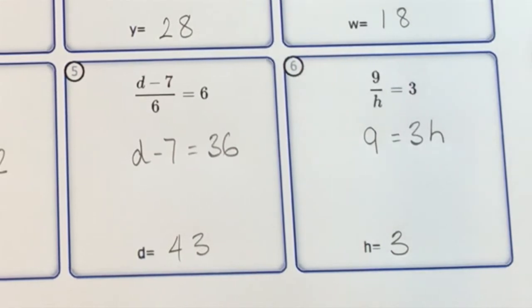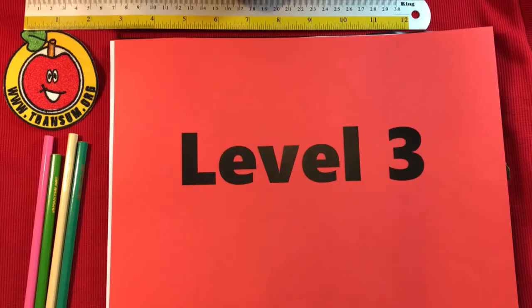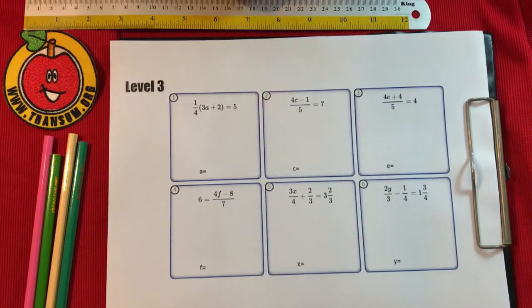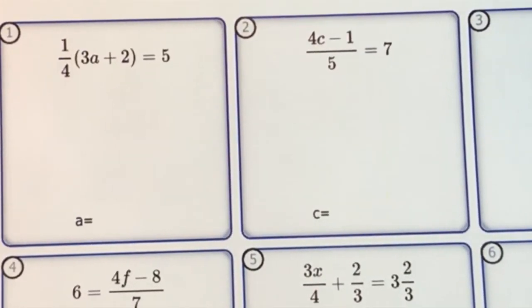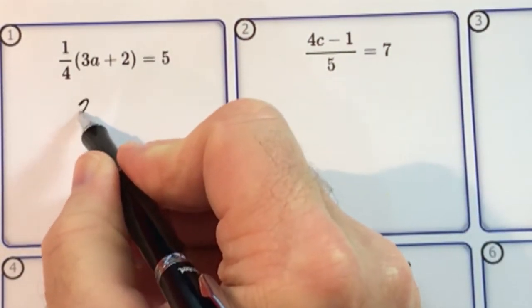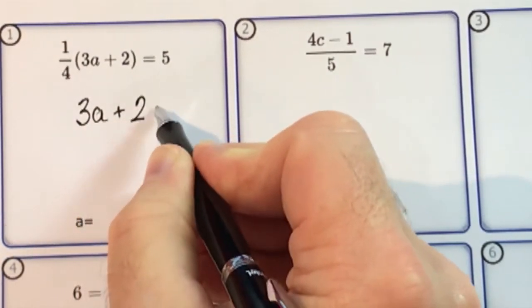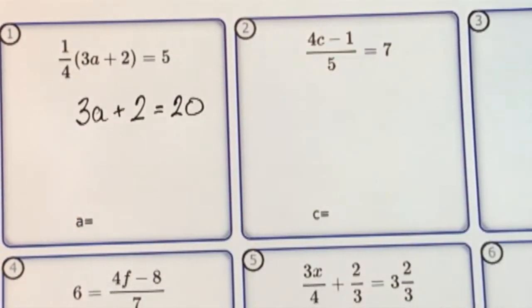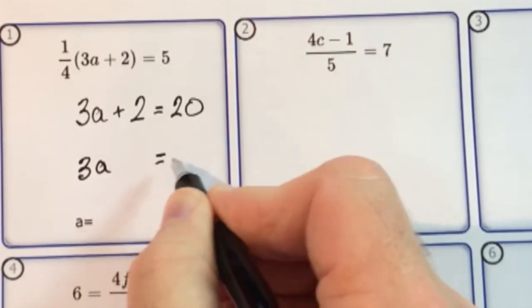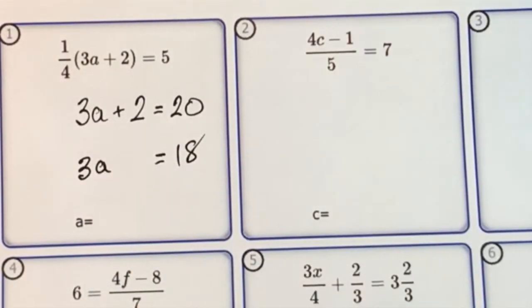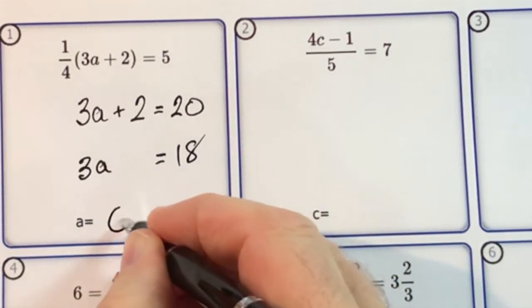Have a go at level 2 — don't forget to press the check button regularly, then come back for level 3. Questions in level 3 are generally three-step solutions. Let's have a go: multiply both sides by 4, giving 3a plus 2 equals 20. Then subtract 2 from both sides to get 3a equals 18. Then divide both sides by 3, so a is equal to 6.